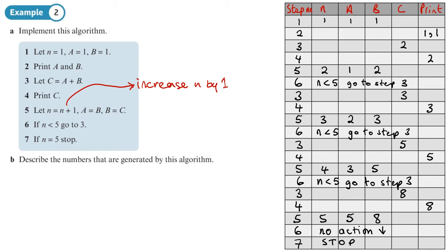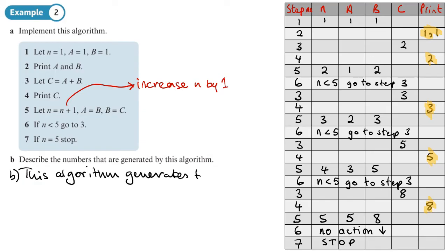Step seven says: if n equals five, stop. So we stop here. Part B asks us to describe the numbers generated by this algorithm. Looking at the numbers that were printed: 1, 1, 2, 3, 5, 8 — those are the Fibonacci numbers. This algorithm generates the Fibonacci sequence.